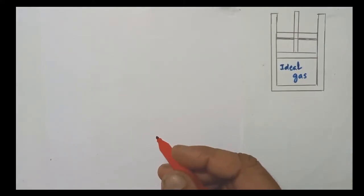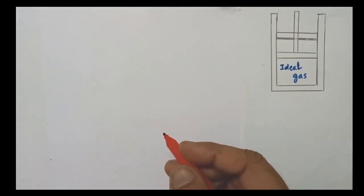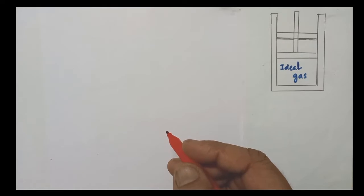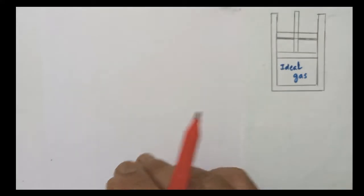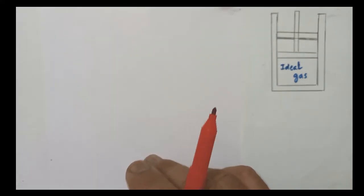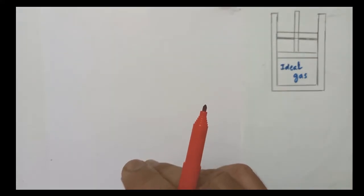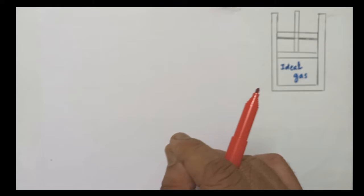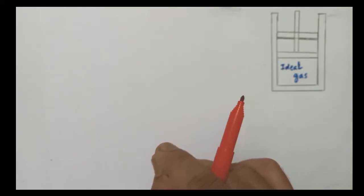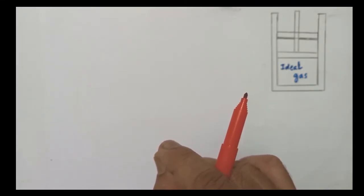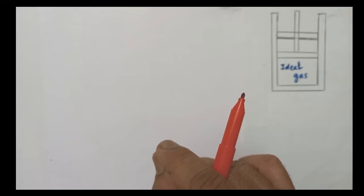We are going to derive the expression for work done in the isothermal process. We have already seen what the isothermal process means. In the case of an isothermal process, the temperature of the system remains the same, but the pressure and volume of the thermodynamical system will change.